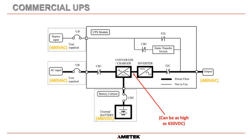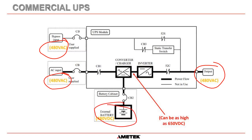We're going to start with what would be considered a normal commercial UPS, taken directly from a commercial UPS manufacturer's manual. The first thing you'll notice is that most commercial UPSs use three-phase 480 volts AC directly into the UPS itself, and the battery for this system is also 480 volts DC. There's a specific reason for that — it's down to Ohm's law: P equals VI.